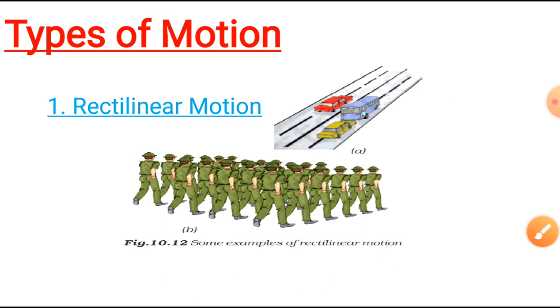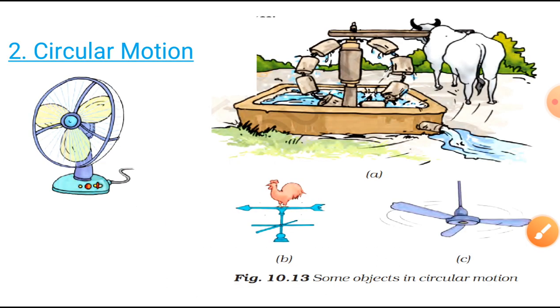Now, let's move to the next type of motion that's on your screen. It's circular motion. The name itself suggests such type of motion in which an object is moving in a circular path. That will be called circular motion. Now, you can see some examples on your screen. First of all, a bullock. It's just moving around this well. So, circular motion.